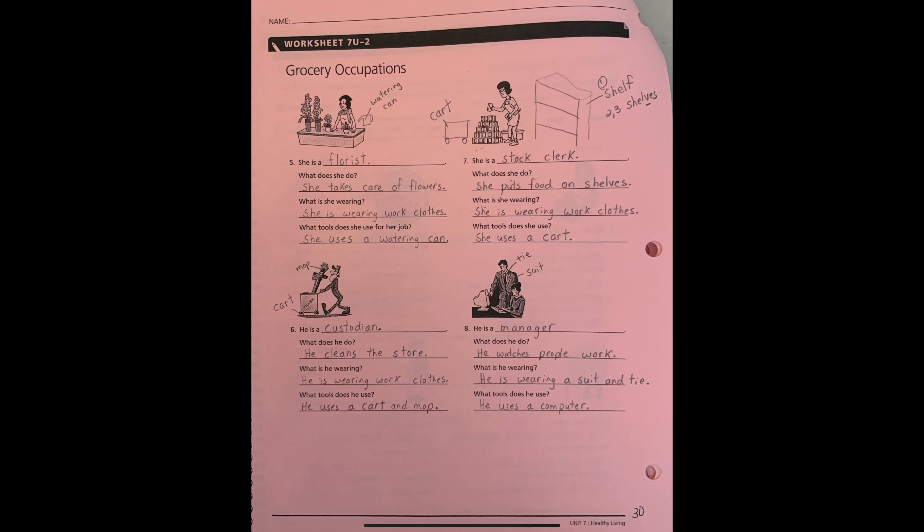Number eight. He is a manager. What does he do? He watches people work. What is he wearing? He is wearing a suit, S-U-I-T, and tie. Students, please label the suit and tie. What tools does he use? He uses a computer.